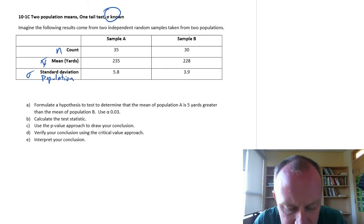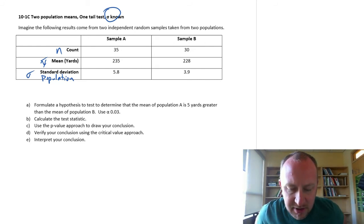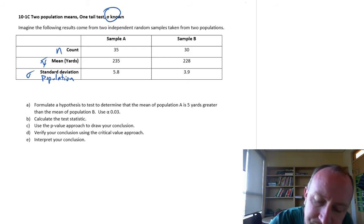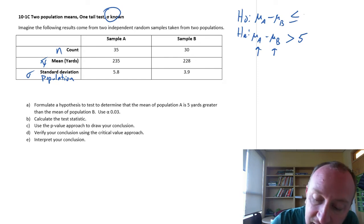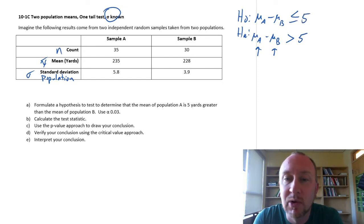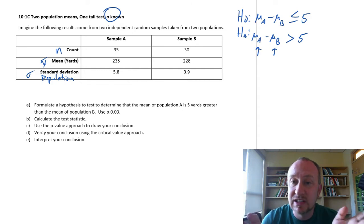So let's just look at this test. Formulate a hypothesis test to determine that the mean of population A is five yards greater than the mean of population B. So what I would do, formulate the null and alternative. I'm going to set this up using the letters mu A, mu B, and I want to see that A is five yards greater than B. So this difference is something more than five, and the null hypothesis is that no, it is not more than five.